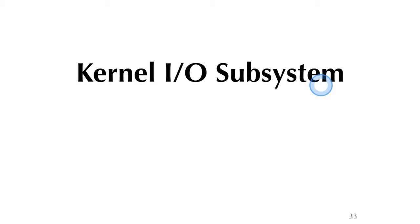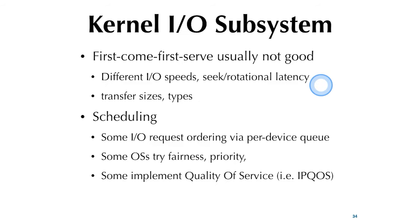The kernel I/O subsystem requires scheduling to account for the characteristics of different I/O speeds, seek time, rotational latency, transfer rate, and device types. FIFO usually doesn't work well. You want to divide requests into different speed classes and queues, reorder and prioritize them. Devices are often measured in terms of quality of service, or QoS.